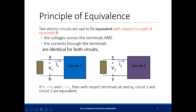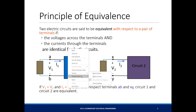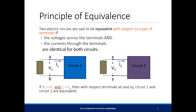Two electric circuits are said to be equivalent with respect to a pair of terminals if V1 equals V2 and I1 equals I2. The circuits are equivalent if their currents and their voltages are equal — both V1=V2 and I1=I2 must hold simultaneously. If either condition is not true, then circuit 1 and circuit 2 are not equivalent.